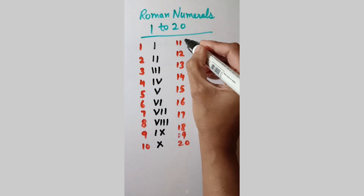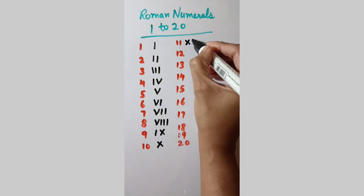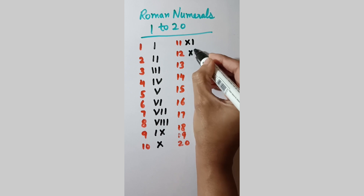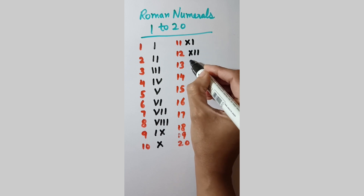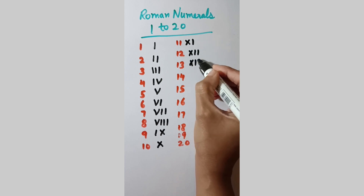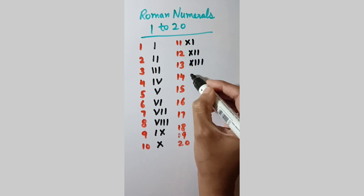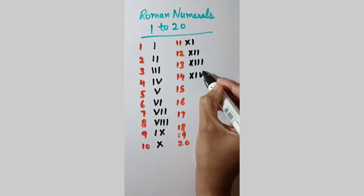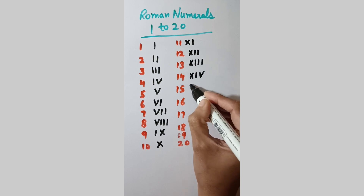11. X. I. 12. X. II. 13. X. II. 14. X. I. V. 15. X. V.